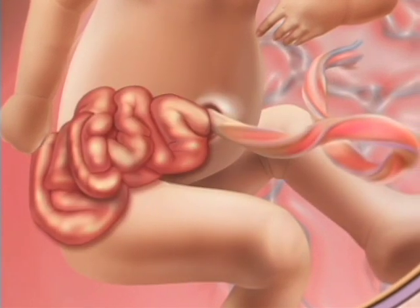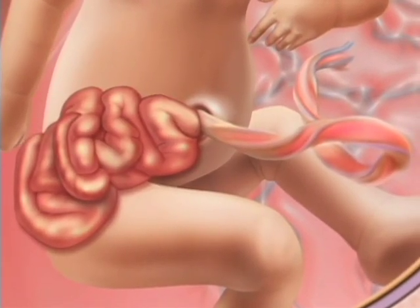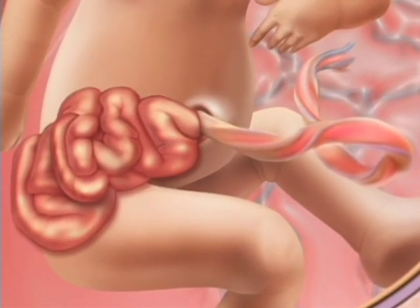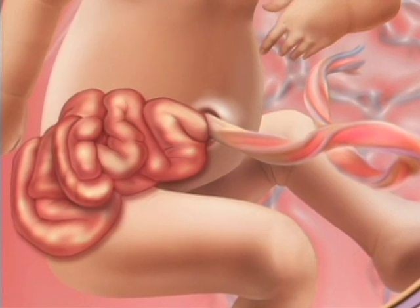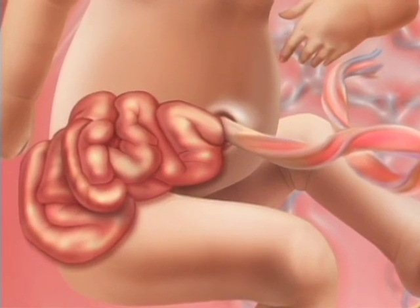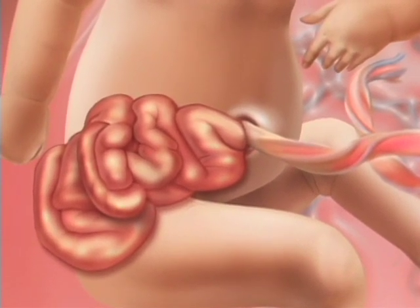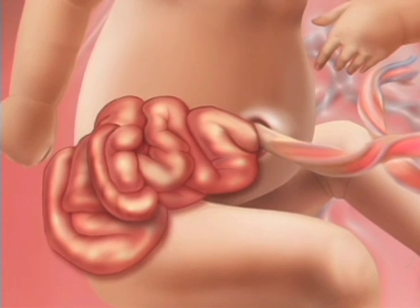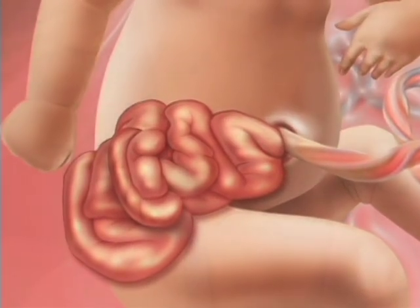A gastroschisis is to the side of the umbilical cord, usually on the right side. There's no membrane, so the small and large intestine can protrude through this hole in the abdomen and go out into the amniotic fluid.